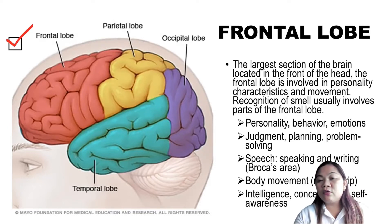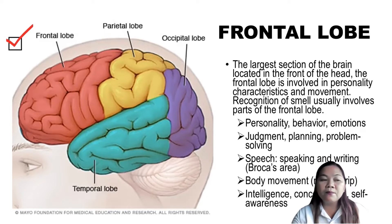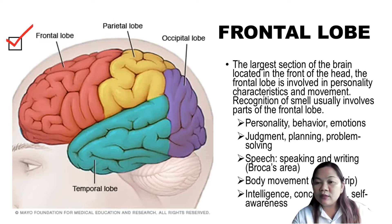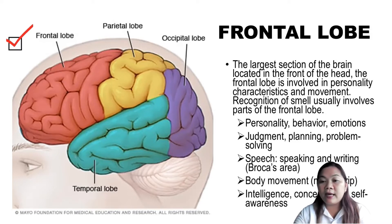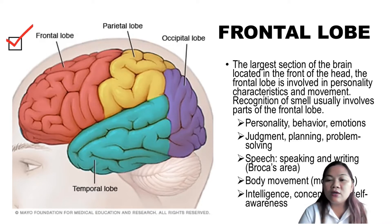Recognition of smell usually involves part of the frontal lobe. The frontal lobe is concerned with our personality, behavior, emotions, judgment, planning, problem solving, speech, body movement, intelligence, concentration, and self-awareness.